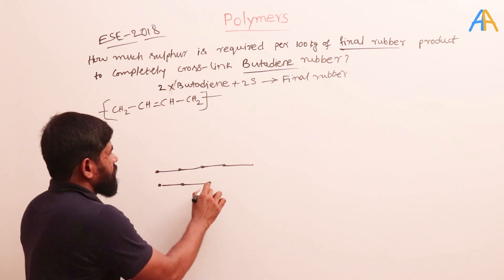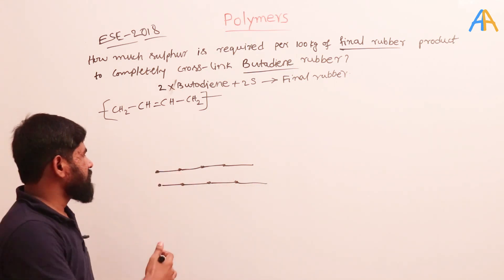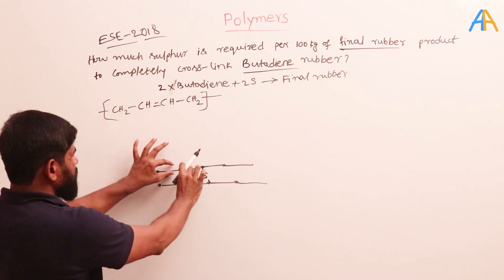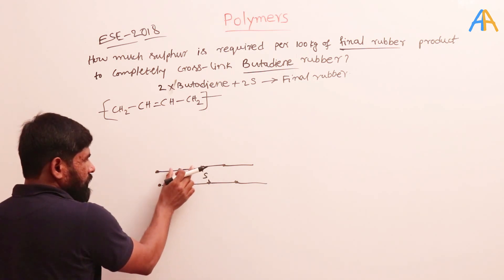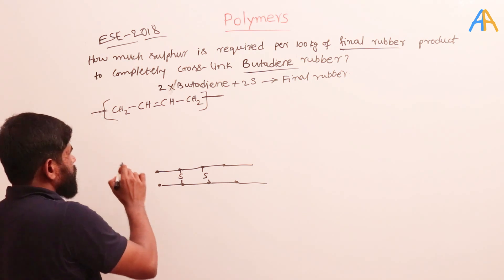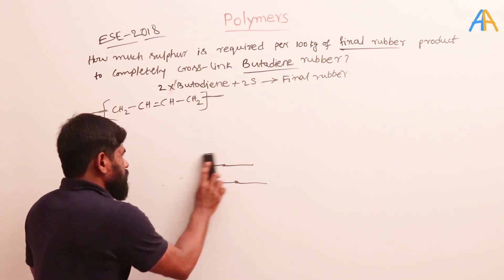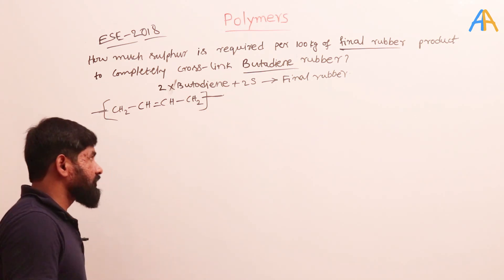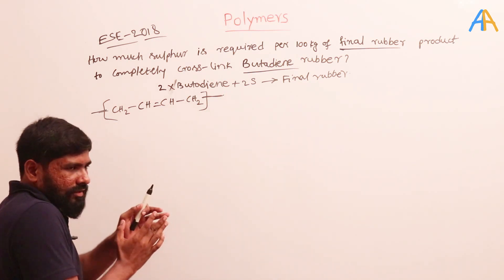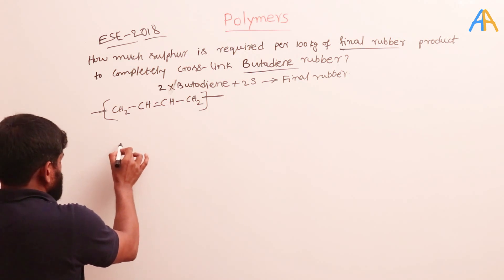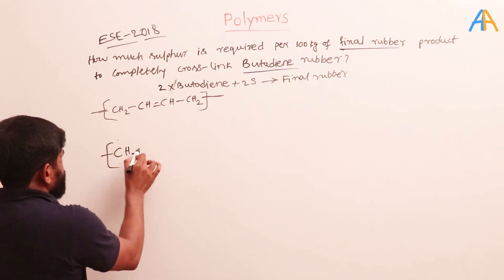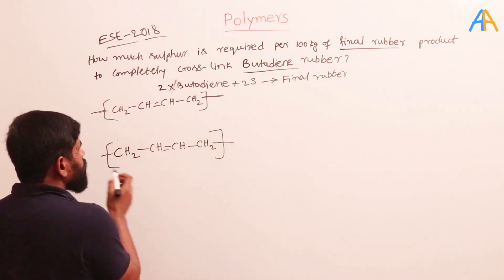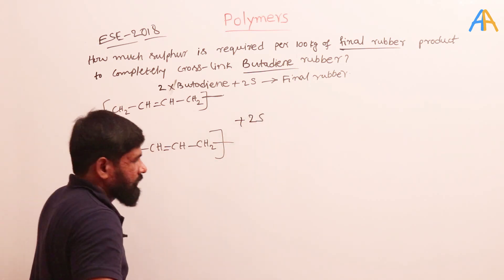In vulcanization, consider one main chain and another main chain running parallel. Vulcanization is the cross-linking between these two main chains — sulfur comes and sits between them, joining them together. So one monomer from one chain and another monomer from a different chain are joined by sulfur. Generally we take two butadiene monomers from different chains.